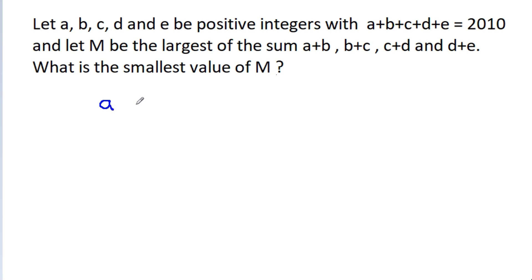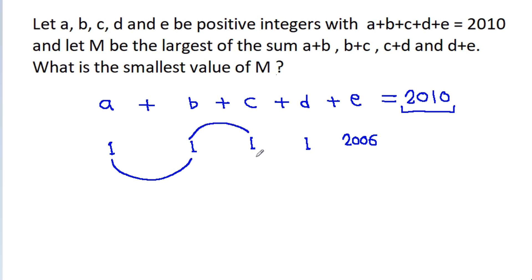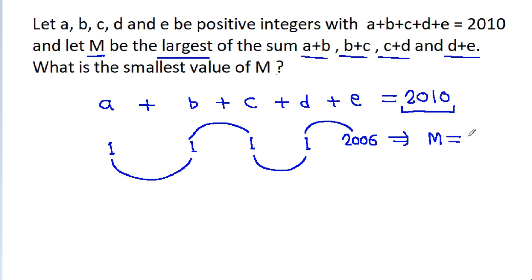So, we have a plus b plus c plus d plus e equal to 2010. Suppose a is 1, b is 1, c is 1, d is 1, then e will be equal to 2006, because the sum is 2010. In this case, a plus b will be 2, b plus c will be 2, c plus d will be 2, and d plus e will be 2007. So m will be equal to 2007.